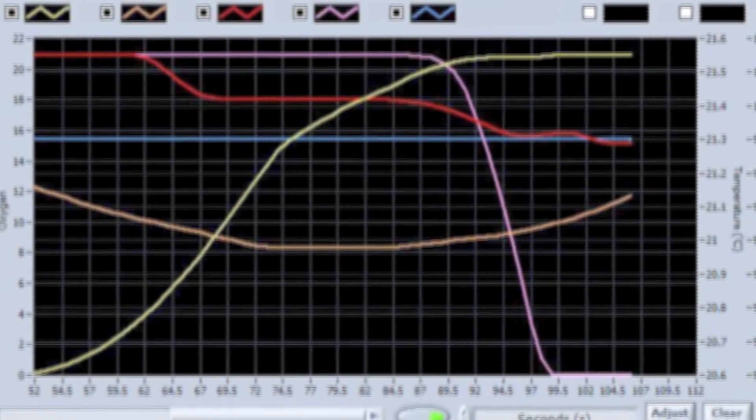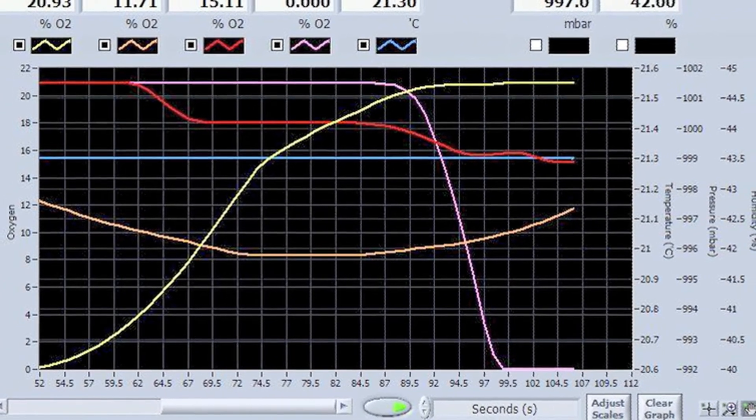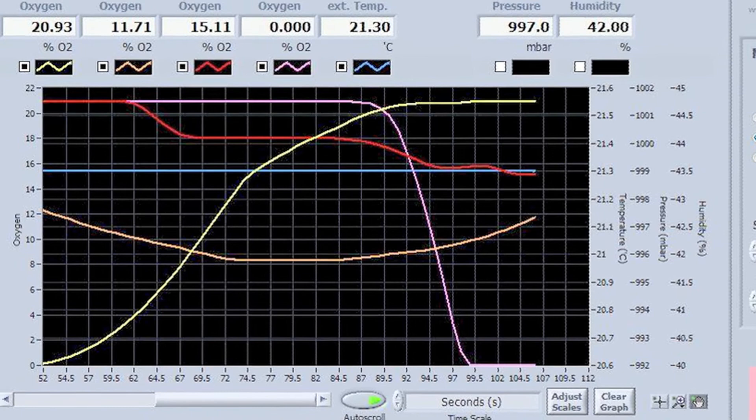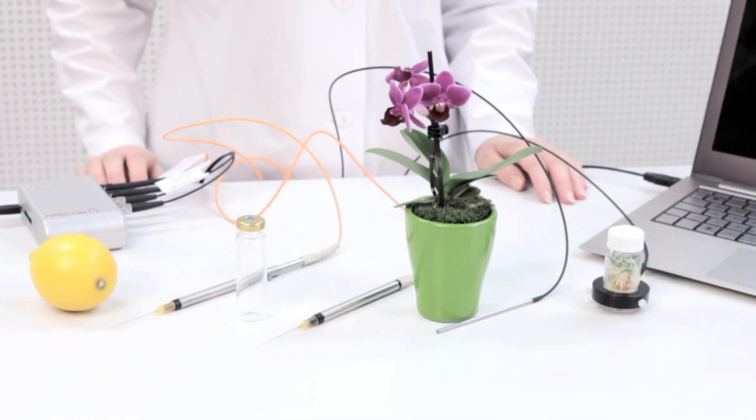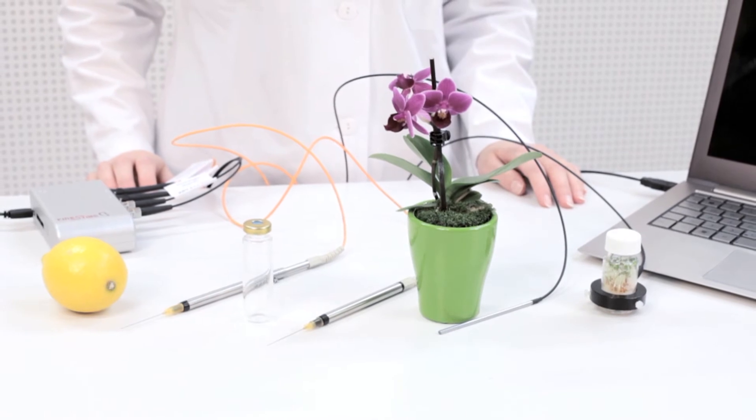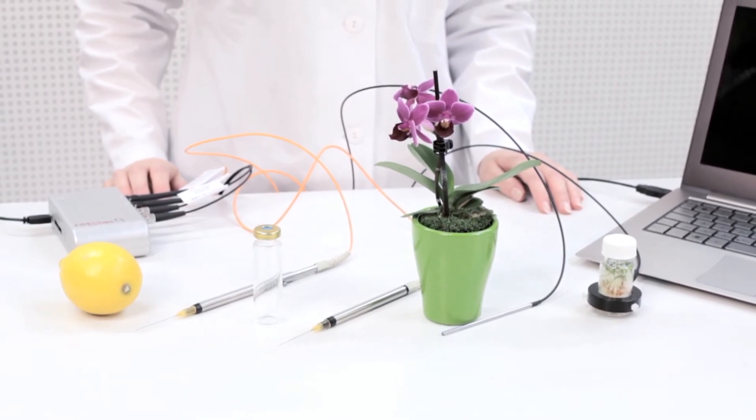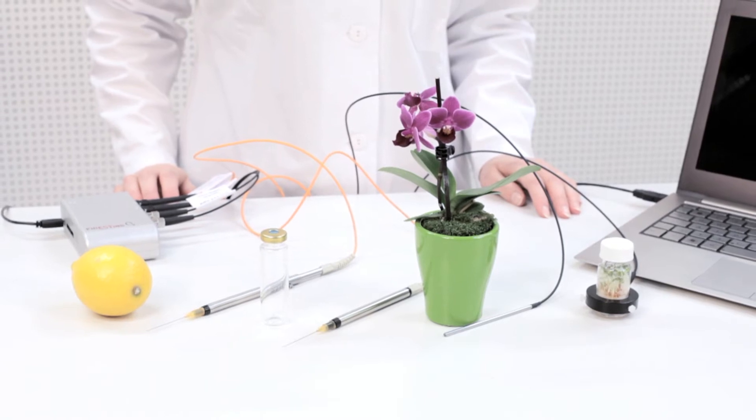The Fire Sting O2 meter comes with a user-friendly logger software, allowing simultaneous control of up to four different oxygen sensors. After you have decided which sensor type is best suited for your specific application, it is only a few steps to start measuring with our plug-and-play system.